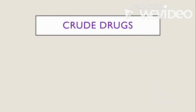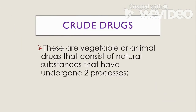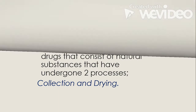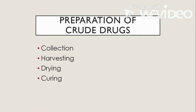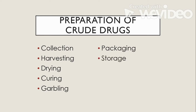Next, we will proceed to crude drugs. These are vegetable or animal drugs that consist of natural substances that have undergone two processes: collection and drying. In preparing crude drugs, we have the following steps: collection, harvesting, drying, curing, garbling, packaging, storage, and preservation.